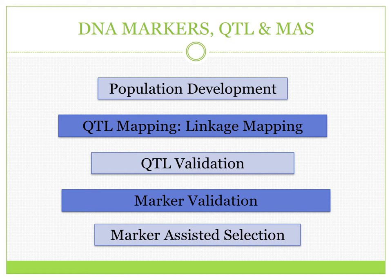The process of DNA marker development relies on the following stages. We first develop a population. We then link specific traits as recorded in the phenotype to the genotype. We validate these traits by performing repeated test crosses, and we validate the markers by ensuring that there is a linkage between genotype and phenotype. This process is known as marker-assisted selection.